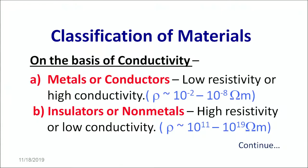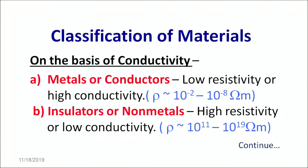On the basis of conductivity, materials are classified into three broad categories. The first one being metals or conductors. Metals or conductors like iron, gold, copper — these have low resistivity and high conductivity. The resistivity is of the order of 10 raised to the power minus 2 to 10 raised to the power minus 8 ohm meters.